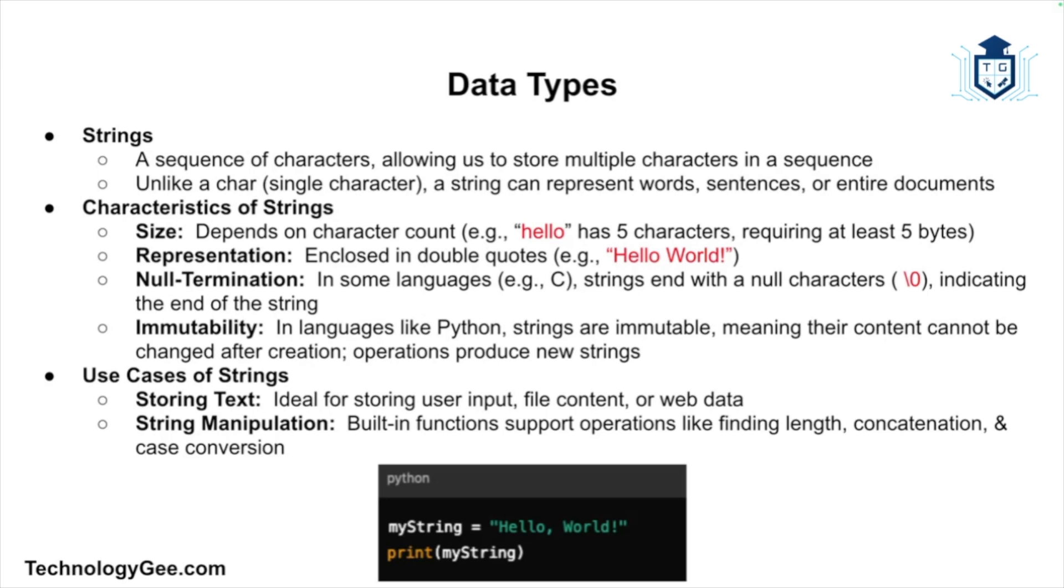Strings are typically enclosed in double quotes, for example hello world. In some languages like C, strings are null terminated, meaning they end with a special character that indicates the end of the string. Another characteristic is immutability. In some programming languages like Python, strings are immutable, meaning once they are created their content cannot be changed. Instead, operations on strings result in the creation of new strings.